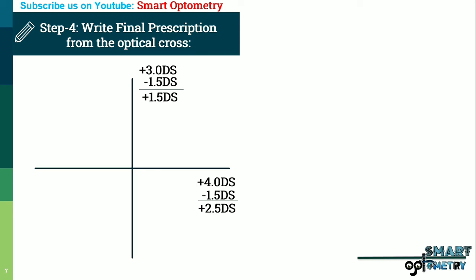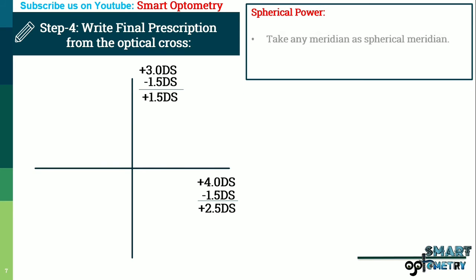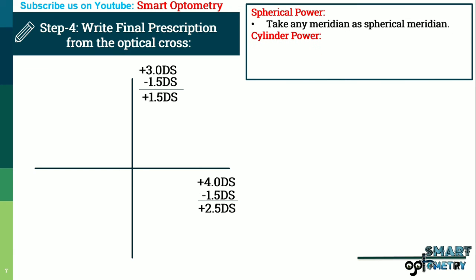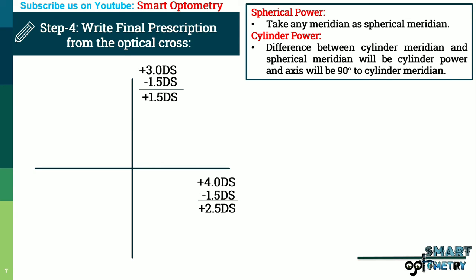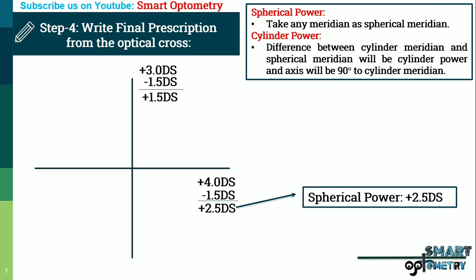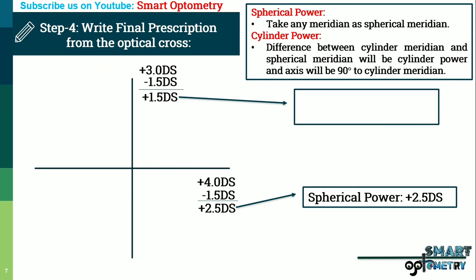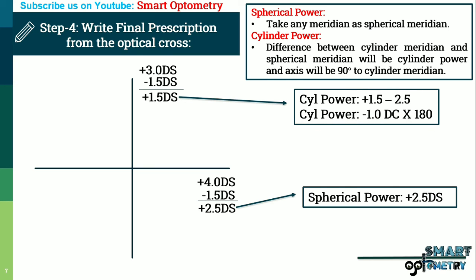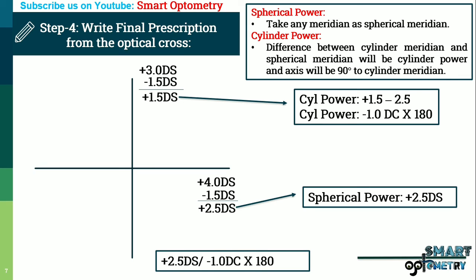Step 4: write the final prescription from the optical cross. Take any meridian as the spherical meridian. The cylinder power is the difference between the cylinder meridian power and the spherical meridian power, and the axis is 90 degrees apart from the cylinder meridian. Taking the horizontal meridian as spherical, the spherical power is plus 2.5 diopters. The cylinder meridian is vertical, so cylinder power = plus 1.5 minus 2.5 = minus 1 diopter cylinder, with axis at 180 degrees. Final prescription: plus 2.5 diopter spherical with minus 1 cylinder at 180-degree axis.